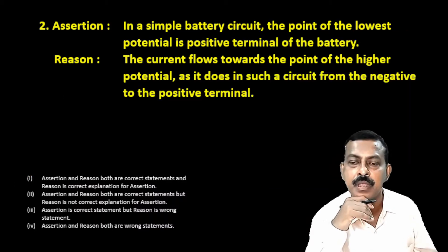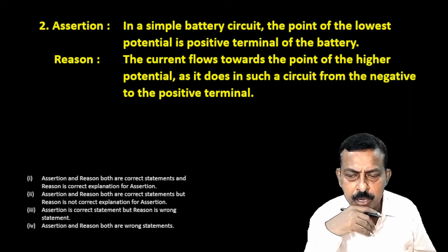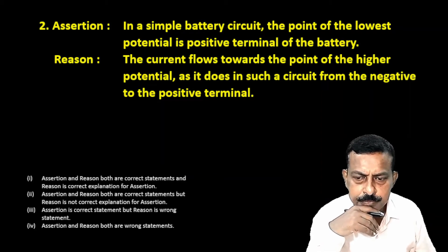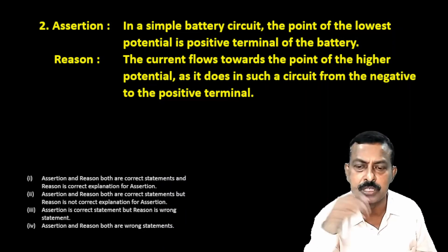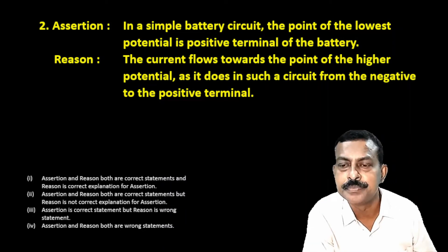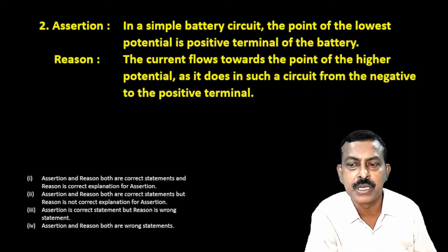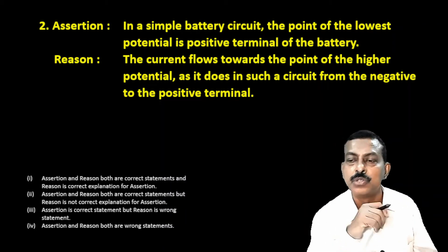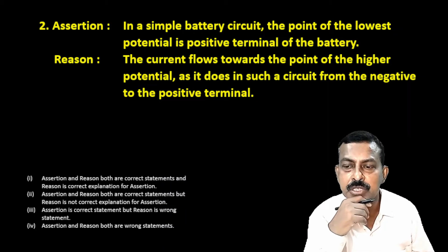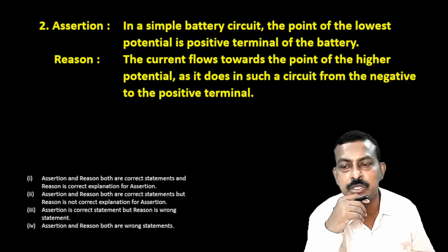Second question. Again the same set of options — assertion and reason both are wrong statements is the fourth one, and assertion is correct but reason is false is the third one. The assertion is: in a simple battery circuit, the point of lowest potential is the positive terminal of the battery.